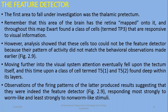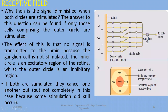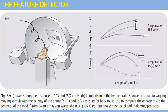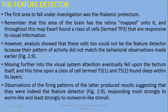The first area to fall under investigation was the thalamus pre-tectum. TP3 — thalamus pre-tectum type 3 — cells: remember that this area of the brain has a retinal map drawn to it, and throughout this map a class of cells was found that are responsive to visual information, which is positive signaling in the retinal area. However, analysis showed that these TP3 cells too could not be a feature detector, because their pattern of activity did not match the behavioral observations made earlier.